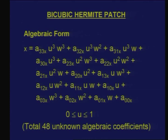It would be rather difficult to design or model a bicubic patch by manipulating these 48 unknowns, because if you vary one of the 48 algebraic coefficients, you don't have a direct perception of which coefficient gives the desired shape change. This is not a very commonly used form of a bicubic patch — just as with Hermite curves, we prefer to use the geometric form.